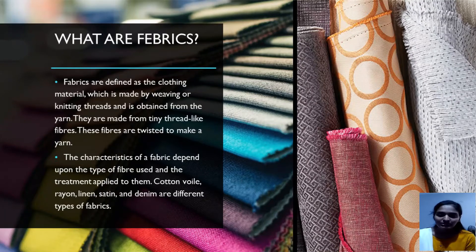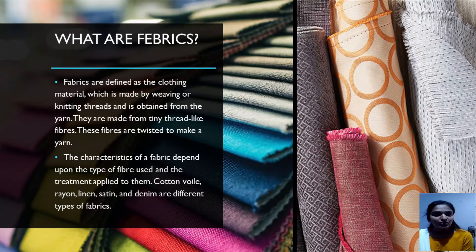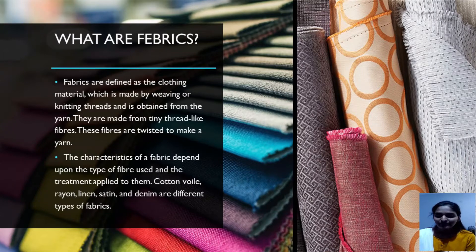Fabrics are defined as the clothing material which is made by weaving or knitting threads and is obtained from the yarn. They are made from tiny threads like fibers. These fibers are twisted to make a yarn. The characteristics of a fabric depend on the type of fiber used and the treatment applied to them. Cotton, rayon, linen, satin, and denim are different types of fabrics.